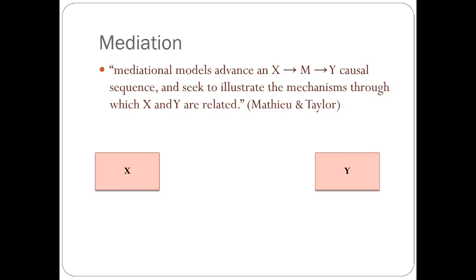Mediation refers to a causal relationship somewhat more complex than the simple x predicts y relationship. When hypothesizing and testing for mediation, a mediating variable, let's call it m, plays some role in the relationship between x and y. What we're hypothesizing is that the relationship between x and y is somewhat more complex than a simple direct effect from x to y, or IV to DV.